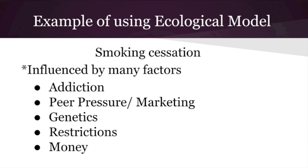An example of an ecological model from the book with a big advantage from this theory is smoking cessation. There are many factors that influence smoking in an individual: it's an addiction; social life affects smoking through peer pressure and marketing; genetics plays a role; restrictions matter because many areas now prohibit smoking; and money influences smoking given the cost of cigarettes.